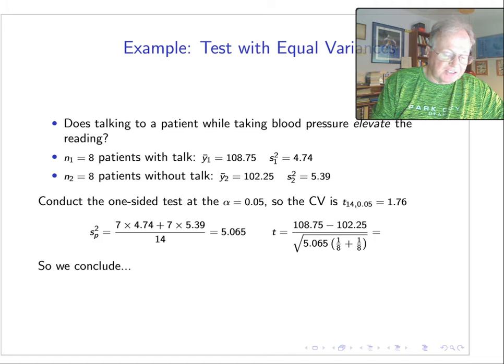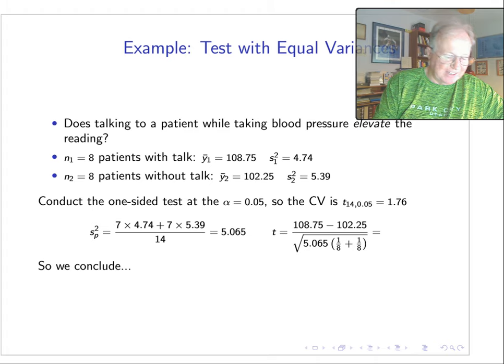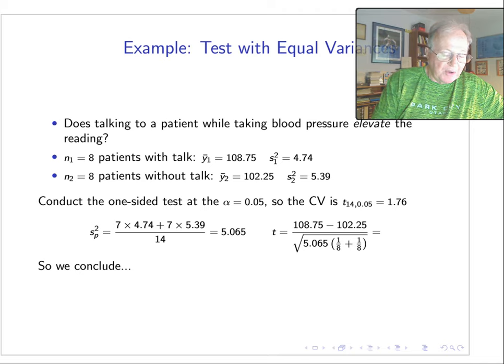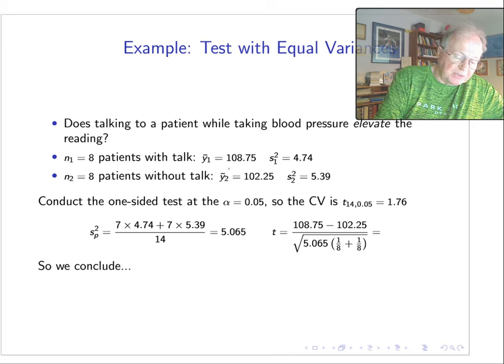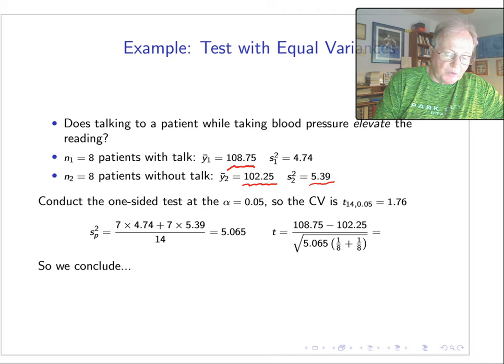Someone actually thought to ask the question: does talking to a patient while taking his blood pressure elevate the reading? I know I find that a little bit annoying when I go to visit the doctor. So here's an experiment—a balanced experiment. Eight patients with each treatment. Eight patients had their blood pressure taken with talking; the average blood pressure reading was 108.75 with a variance of 4.74. Eight more patients had their blood pressure taken without talking; their average was a little bit lower, 102.25, and the variance was 5.39.